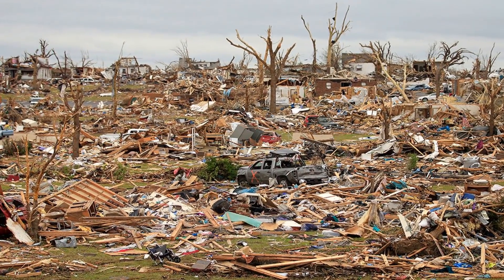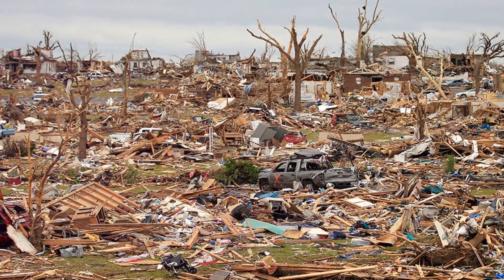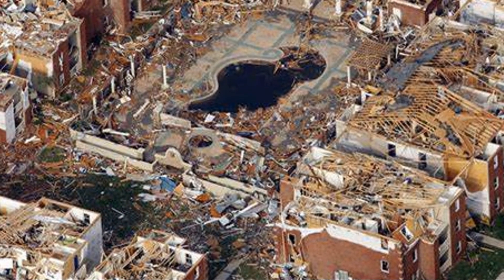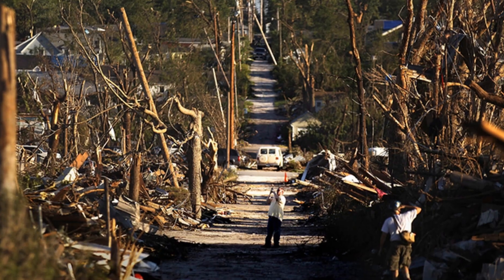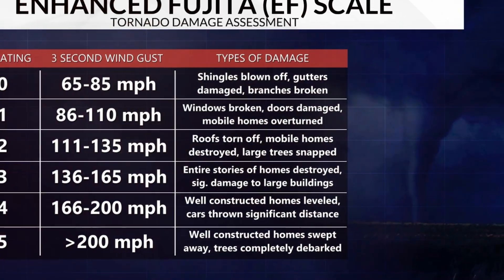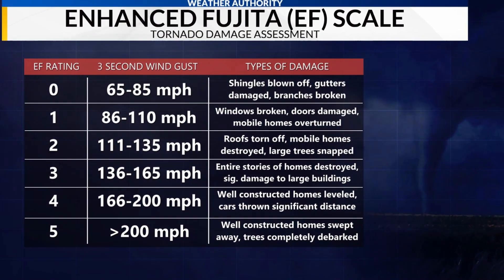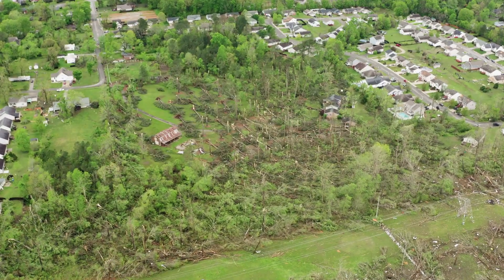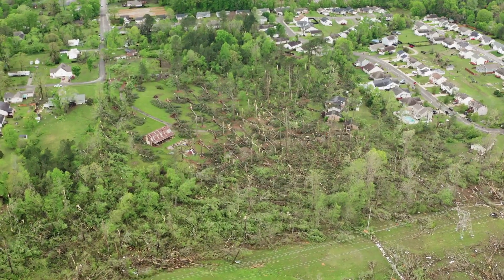A famous EF5 was the Joplin tornado in 2011. It killed 158 people, injured over a thousand, and caused 2.8 billion dollars in damage. Each level of the EF scale shows the potential for destruction — understanding this helps us prepare and react when tornadoes strike.